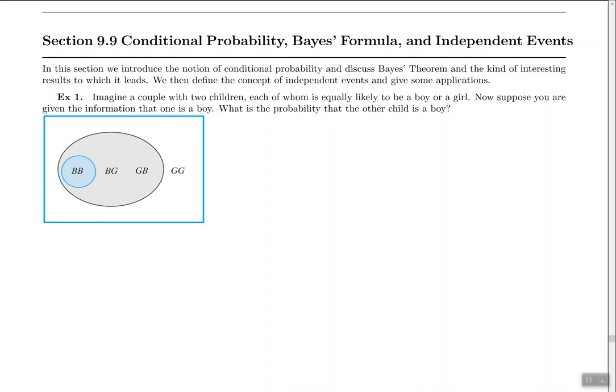To help us get the probability here we will think of the children as being pairs of letters. The first letter in the pair is going to represent the older child and the second letter in the pair is going to represent the younger child.